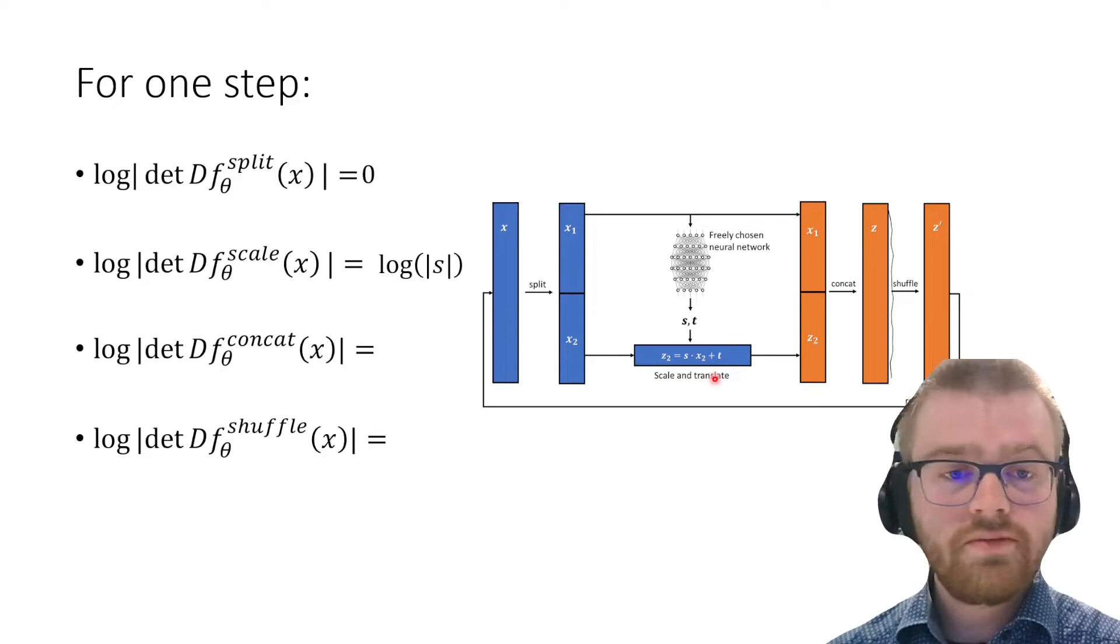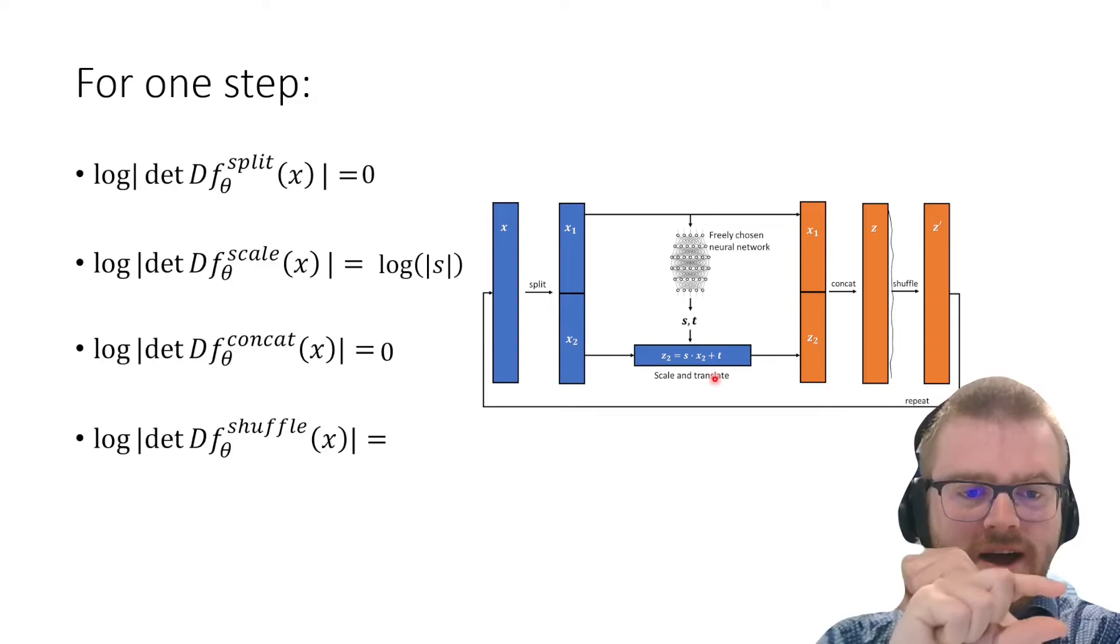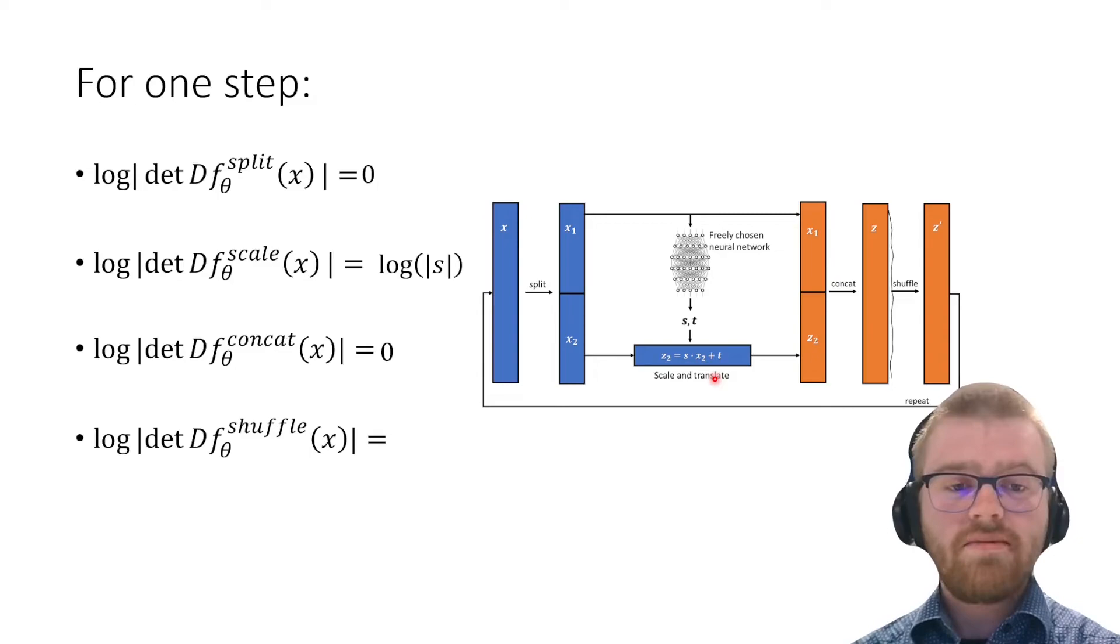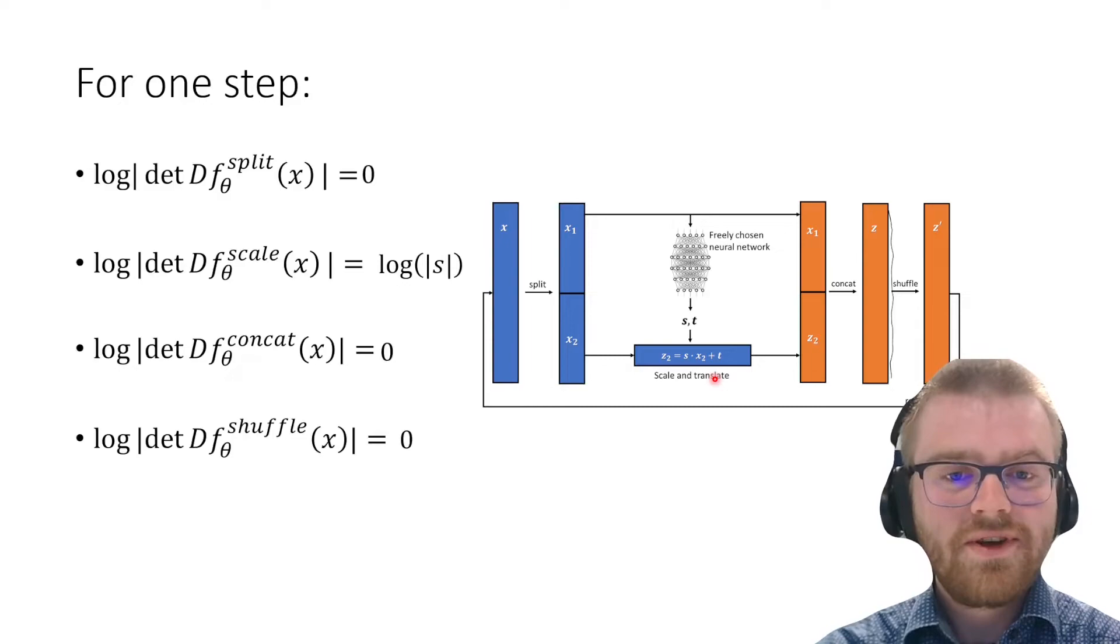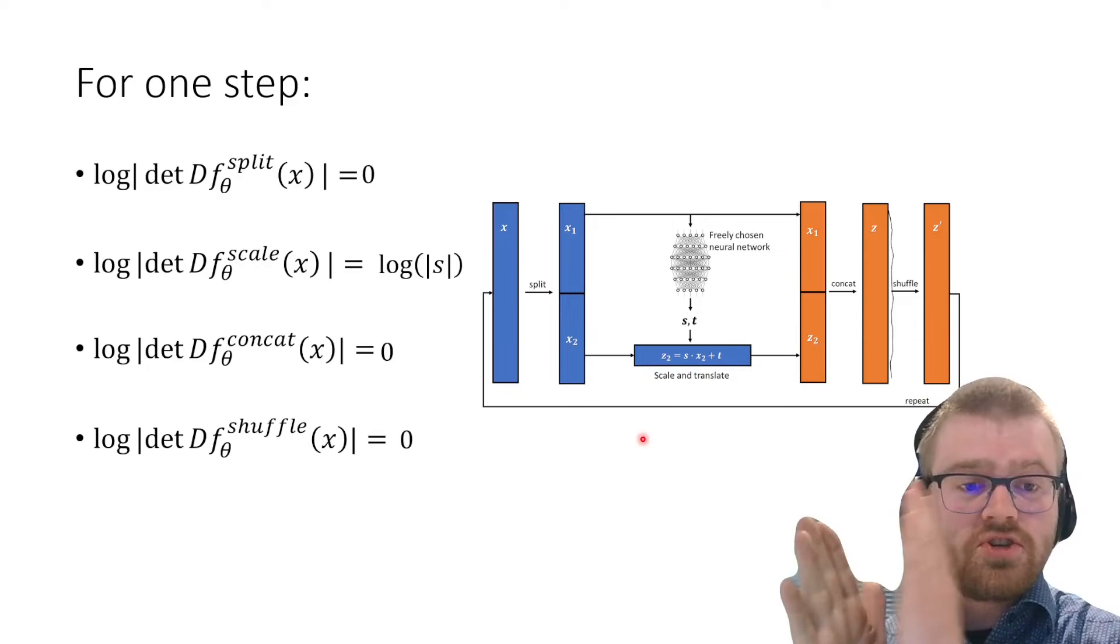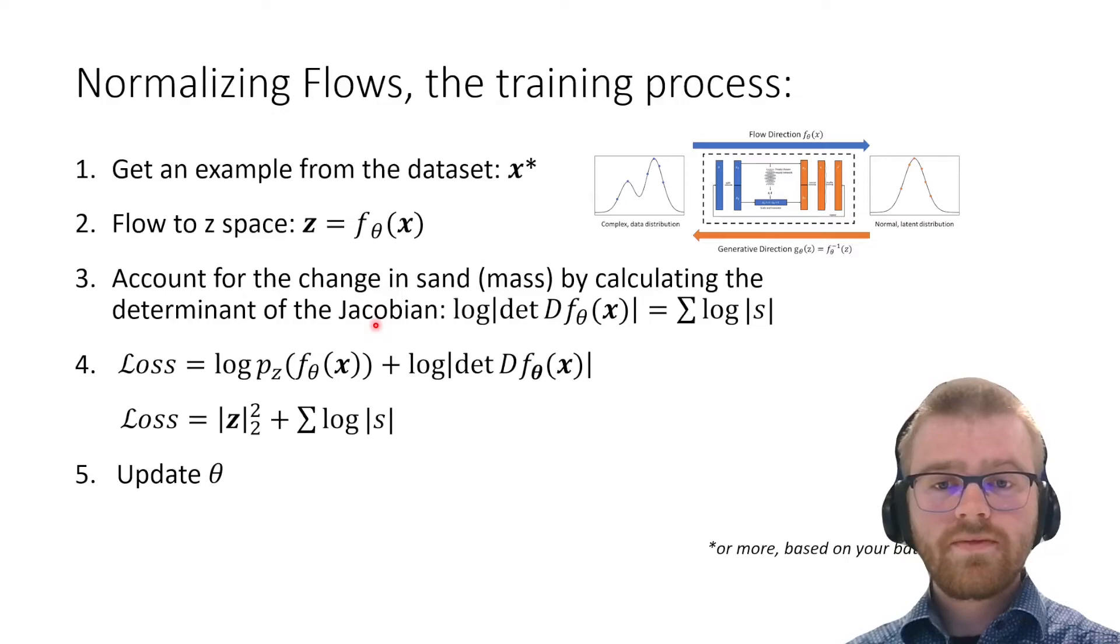Concatenation—again not moving any sand around, so zero. Shuffling: we're taking grains of sand individually and flipping them around. While this changes where sand is located, it does not push and stretch the amount of sand in a local neighborhood, so the log determinant is zero. For this affine flow, the log determinant is just the logarithm of s. If we string many affine couplings after each other, we just get a summation of all the logarithms of all the scales.